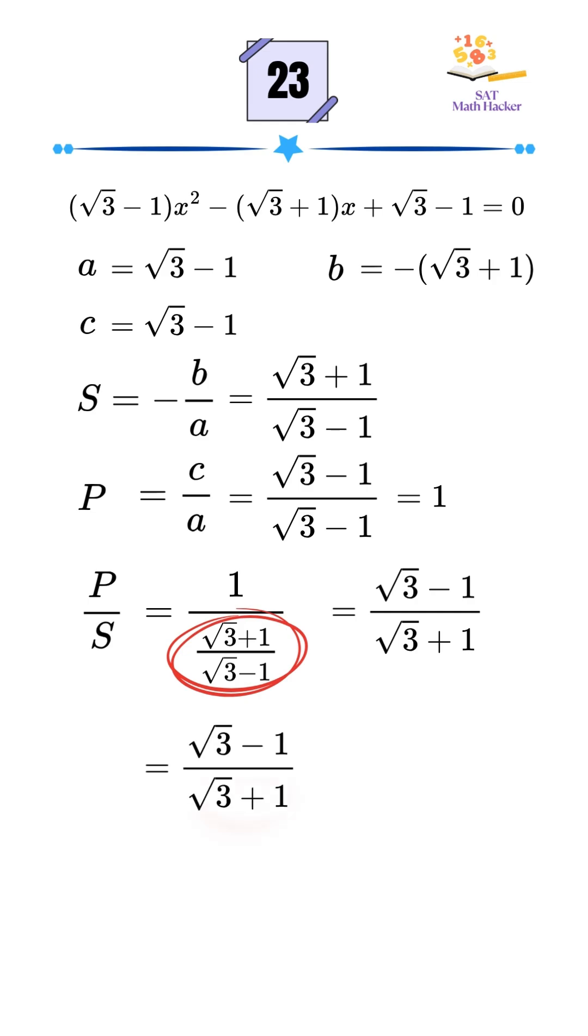To simplify we rationalize the denominator by multiplying both the numerator and denominator by square root of 3 minus 1. In the numerator we apply the square of a binomial formula. In the denominator we use the difference of squares formula.